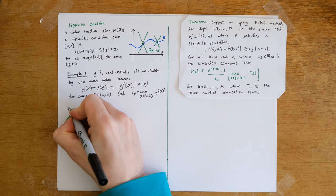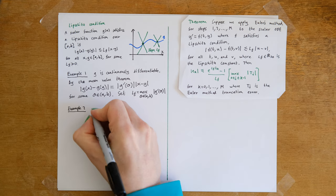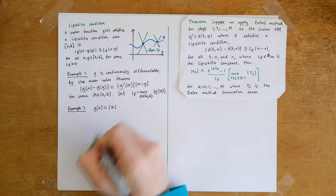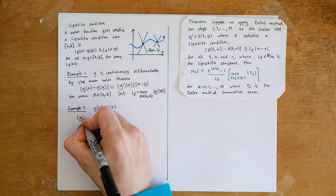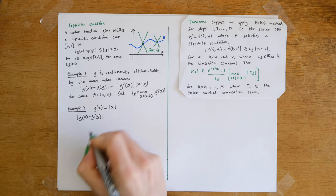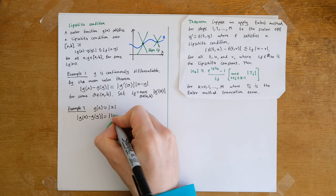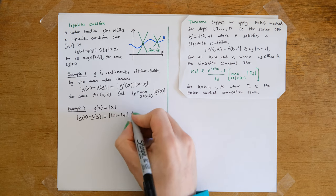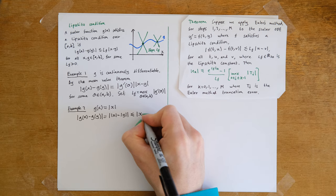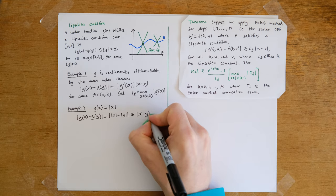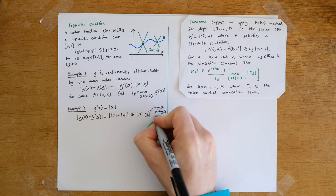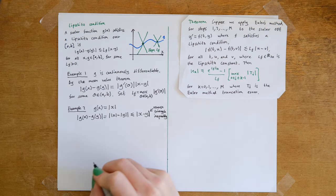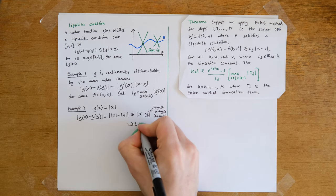As a second example, let's look at the function g(x) = |x|. This is a good example because it is not differentiable, but we can still establish a Lipschitz condition. The magnitude of g(x) minus g(y) equals the magnitude of |x| minus |y|, which is less than or equal to the magnitude of x minus y by the reverse triangle inequality. This implies that L_f equals 1.